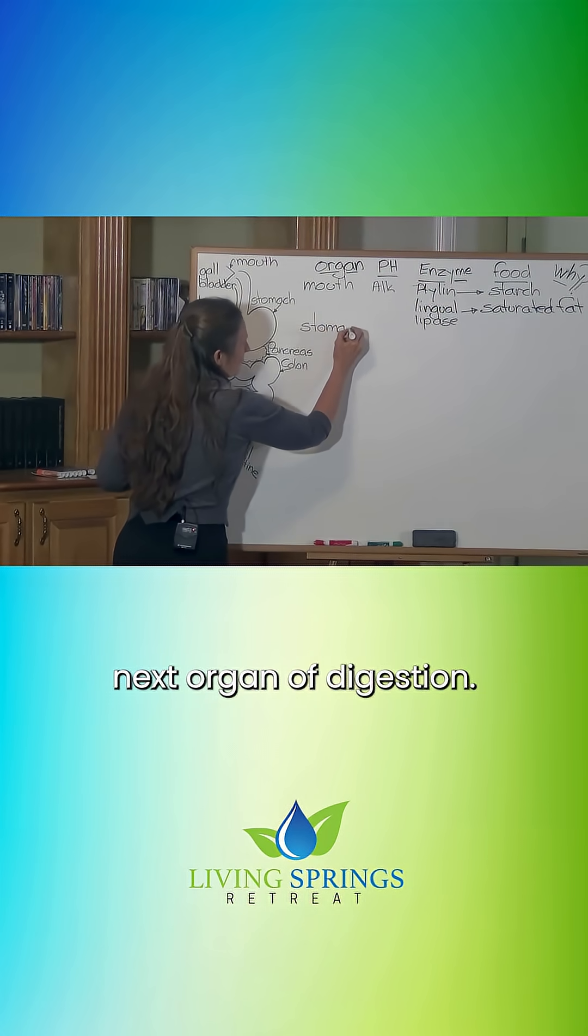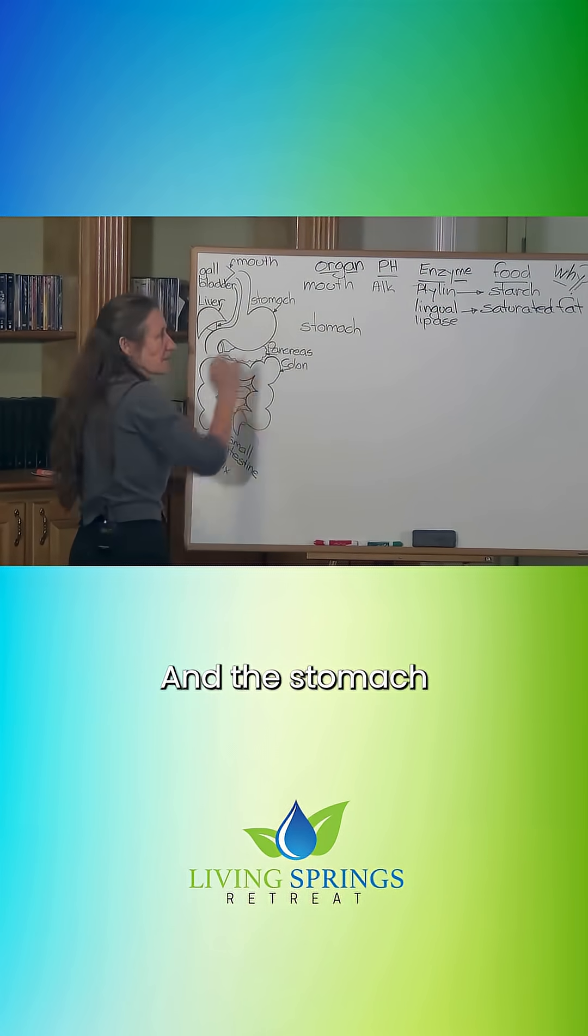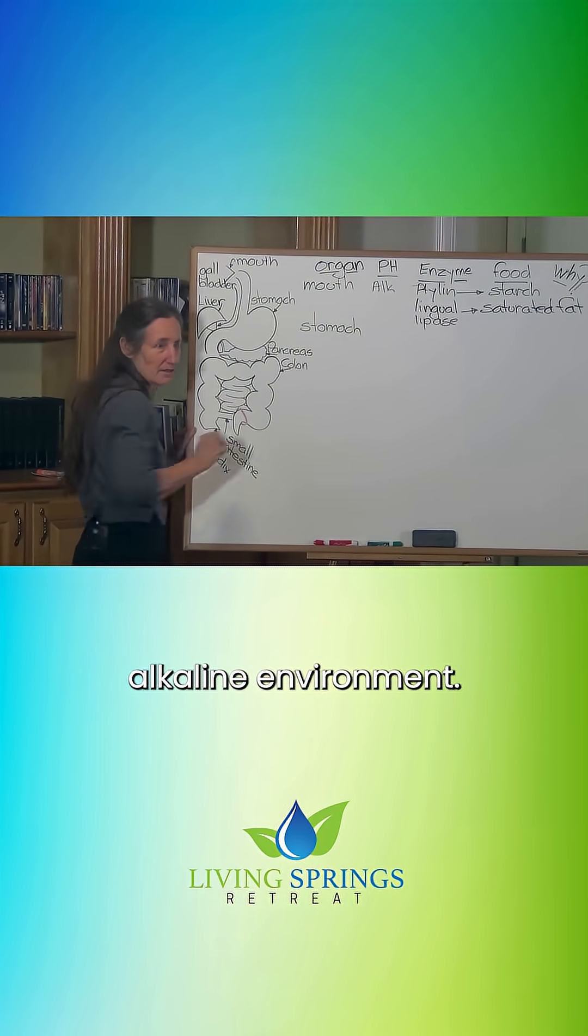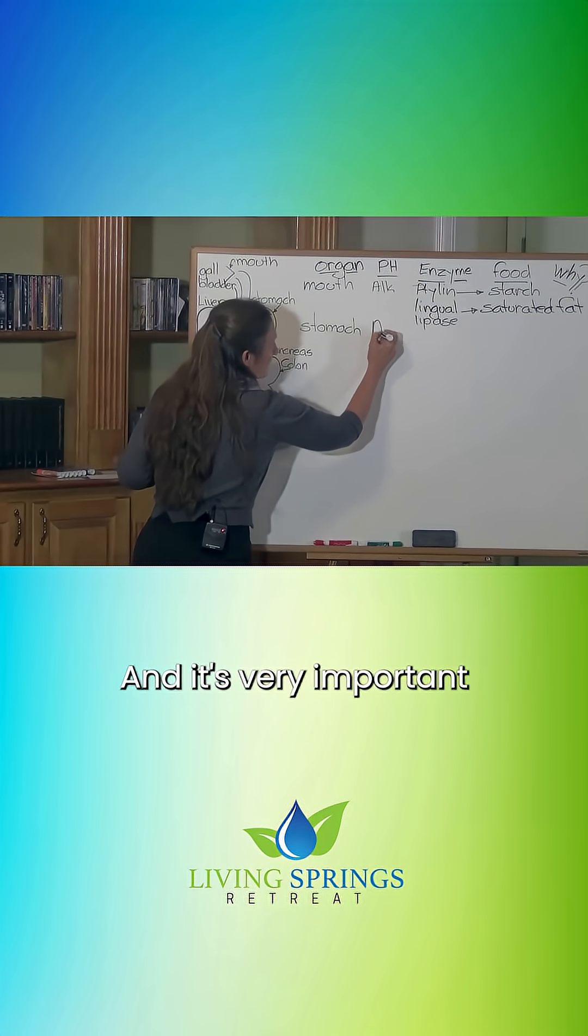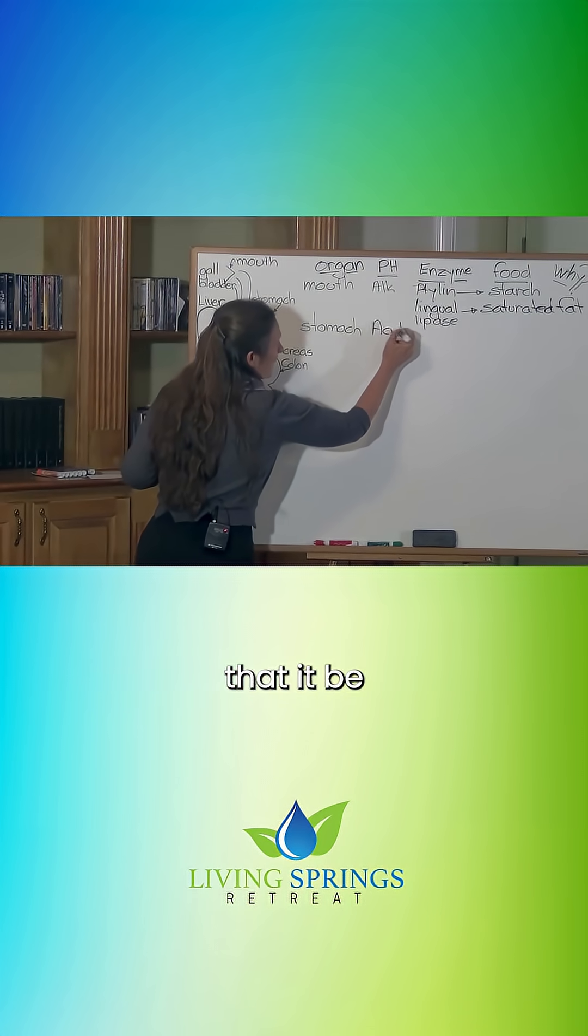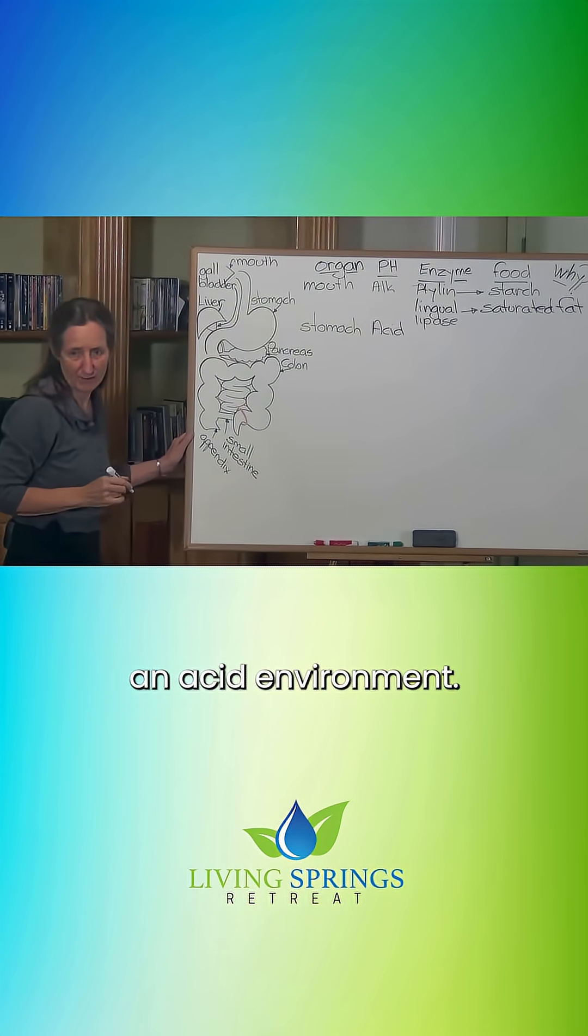The stomach is the next organ of digestion. The stomach is not an alkaline environment—it is an acid environment, and it's very important that it be an acid environment.